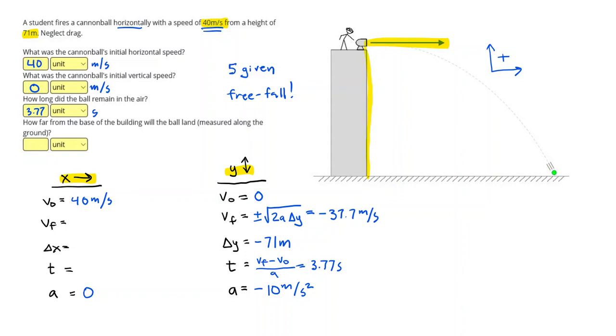Alright, so moving over to the horizontal side, I can use that same time of 3.77 seconds. Since the ball will move down for just as long as it will move to the right, the whole problem, the whole flight. I know my speed is constant.